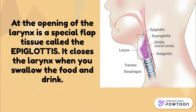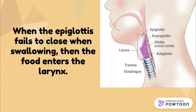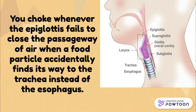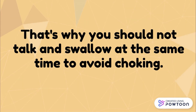At the opening of the larynx is a special flap tissue called the epiglottis. It encloses the larynx when you swallow food and drink. When the epiglottis fails to close when swallowing, then the food enters the larynx. Have you experienced being choked while eating? You choke whenever the epiglottis fails to close the passageway of air when a food particle accidentally finds its way to the trachea instead of the esophagus. That's why you should not talk and swallow at the same time to avoid choking.